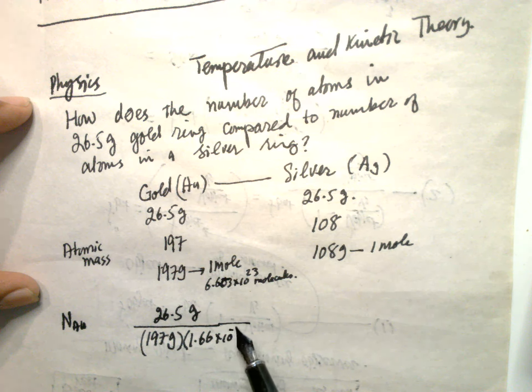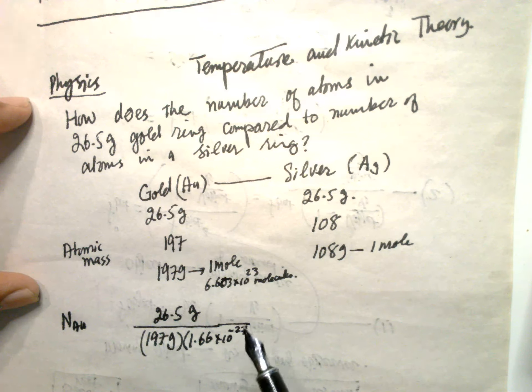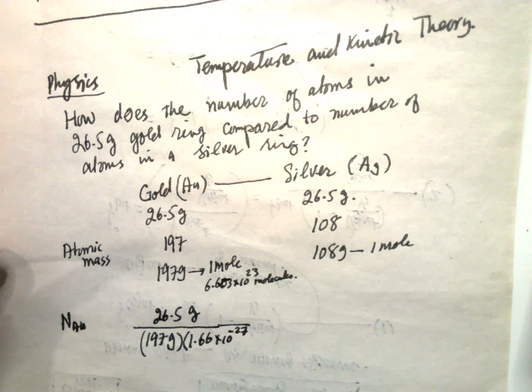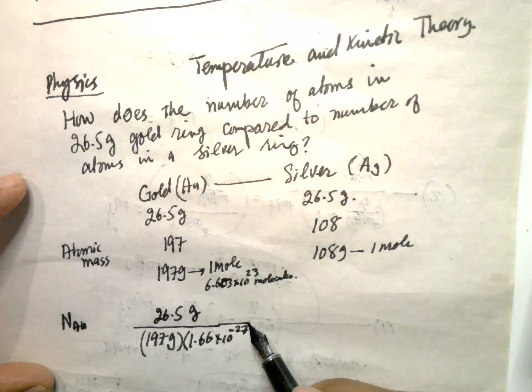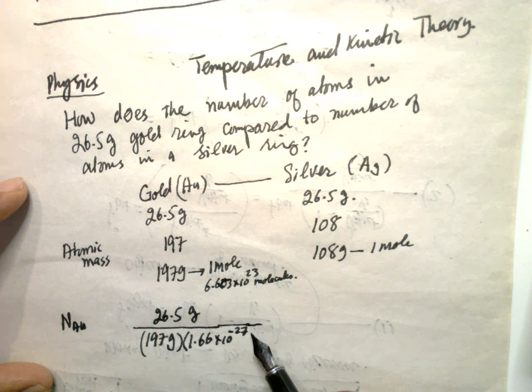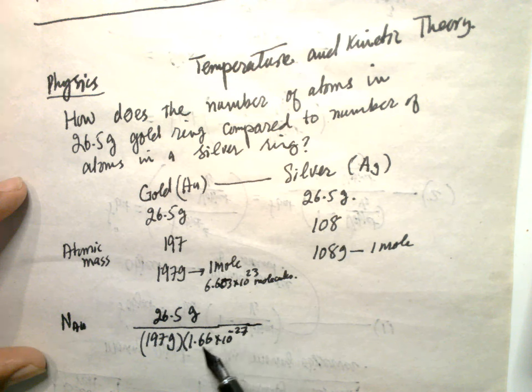1.66 times 10 to the power minus 27. This number, one Au.